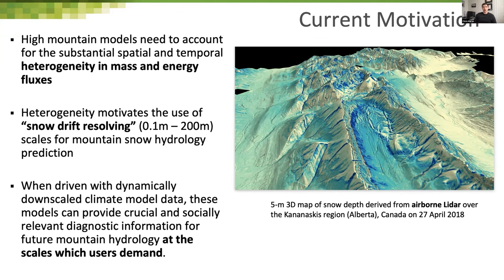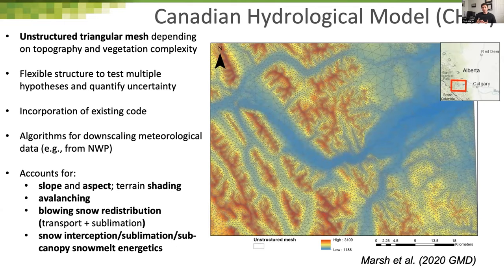The motivation is really focused on high mountains and models that need to account for substantial spatial-temporal heterogeneity in mass and energy. Accurately representing these heterogeneities motivates the use of snow-drift-resolving scales — perhaps 0.1 meter to about 200 meter length scales — to get at the horizontal advection that leads to the heterogeneities we observe. Having a model with these heterogeneities driven with dynamically downscaled climate model data can provide crucial and socially relevant information from future mountain hydrology.